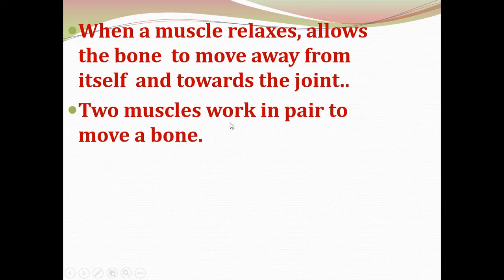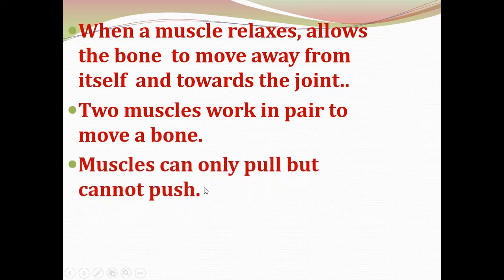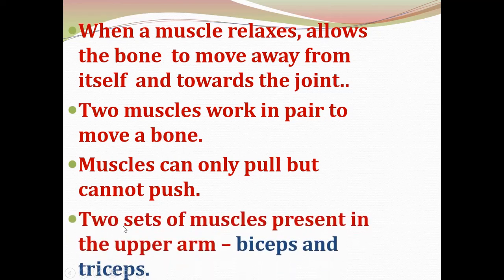Two muscles work in a pair to move a bone. The combination of two muscles results in the movement of the bone. Muscles can only pull but cannot push. The two sets of muscles present in the upper arm are biceps and triceps.